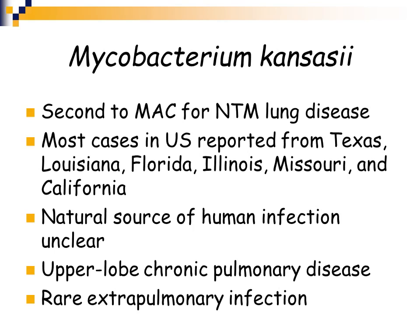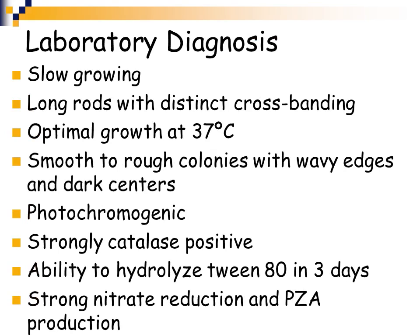The natural source of human infection with M. kansasii is not very clear. It causes a chronic pulmonary disease in the upper lobe of the lung, and rarely causes an extra-pulmonary infection. In the laboratory, mycobacterium kansasii is slow growing. These are very long rods that tend to have a banding pattern when stained. They optimally grow at body temperature. They can have either smooth or rough colonies with wavy edges and darker centers. They are photochromogens, very strongly catalase positive, can hydrolyze Tween 80 within three days, and have strong nitrate reduction and pyrazinamidase production.